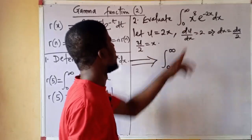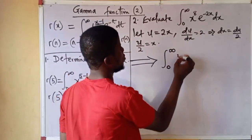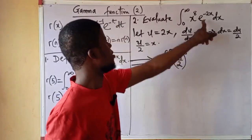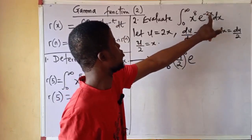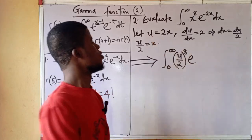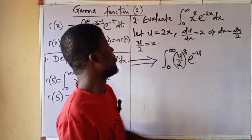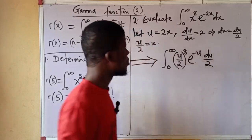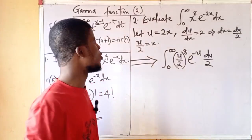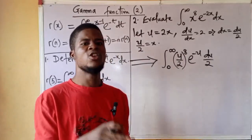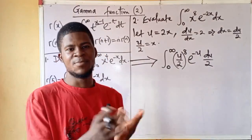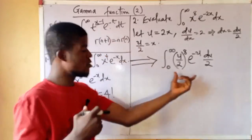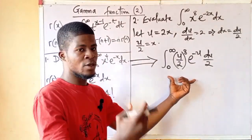The integral is rewritten with x replaced by u over 2, all to the power of 8, times e to the power of minus u — since 2x equals u — times dx replaced by du over 2. The integral has now been modified in terms of u, not x, so that we can express it exactly in the standard gamma function form.